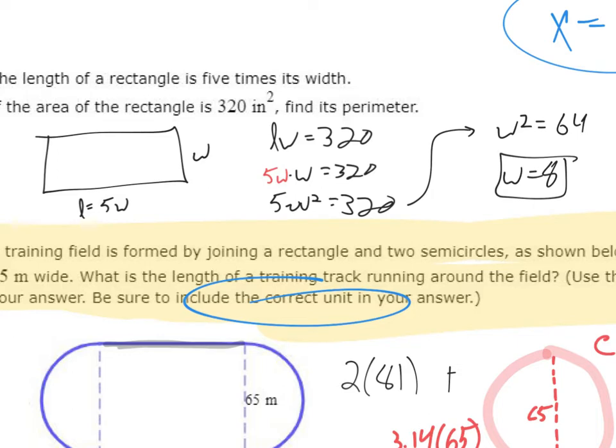And I'm noticing now, I actually didn't complete this problem. We want to find the perimeter. Well, if I know w is 8, that means 5w, that would be 40. So we have a 40 by 8 rectangle. So if I added all of these together, 8 and 8 is 16, 40 and 40 is 80, so that would be 96. So 96 inches would be the perimeter there.